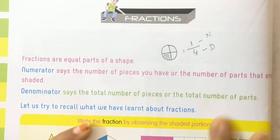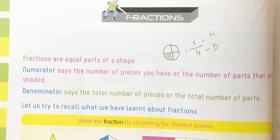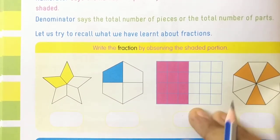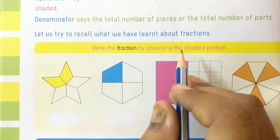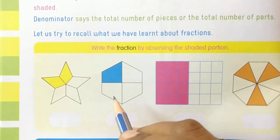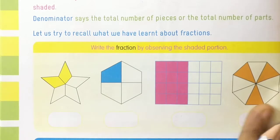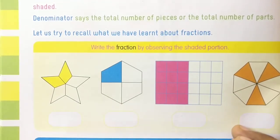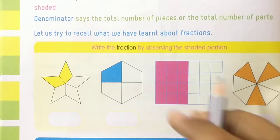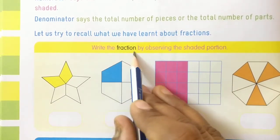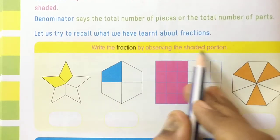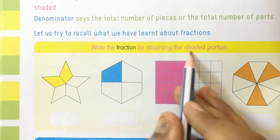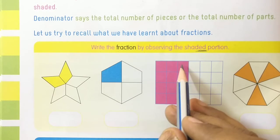Now let us try to recall what we learned about fractions. The introduction part is completed. Now come to the next question. Here they have given some different types of shapes. The question says: write the fraction by observing the shaded portion.